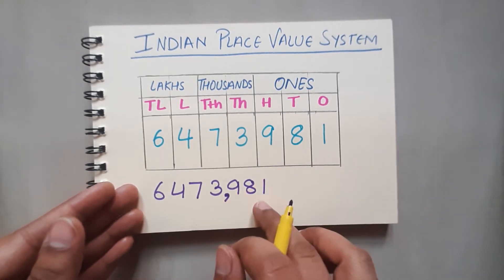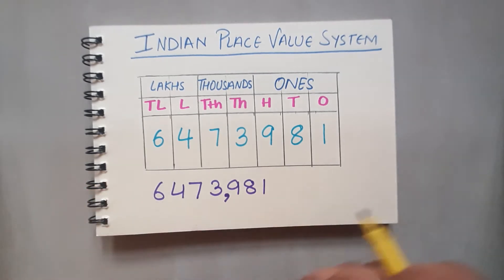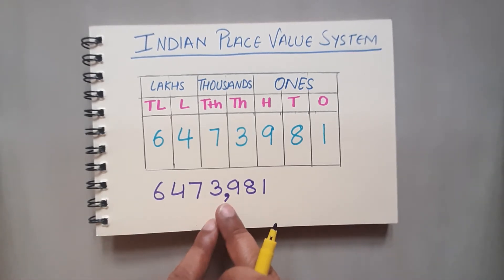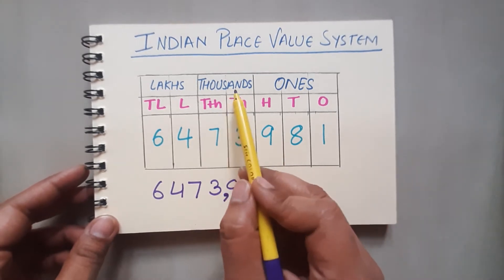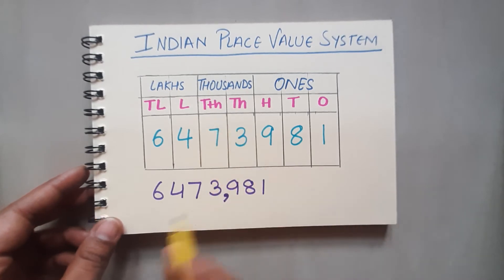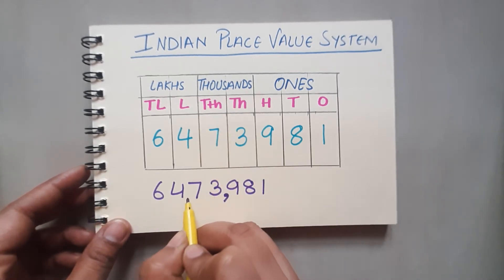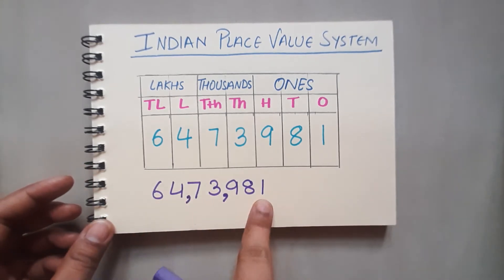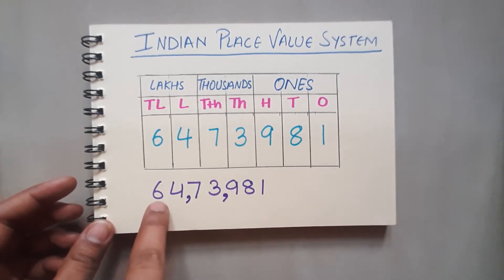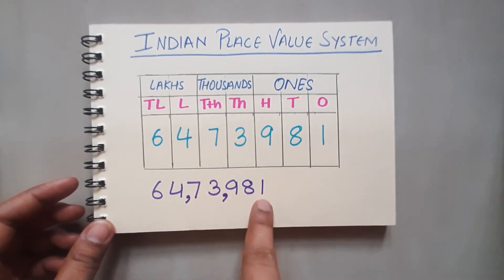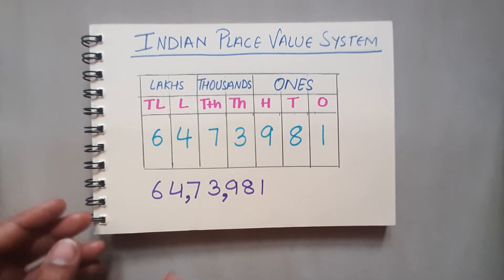My ones period is over, so I am going to put the comma here. If you get a large number without the commas, it will be very difficult for you to read it. With the help of commas you get to know what all places are there. Next period is thousands — in thousands period you have thousand and ten thousand. So thousands, ten thousands — and here I have marked the period.